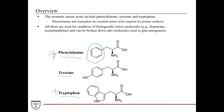Phenylalanine and tryptophan are essential amino acids required for protein synthesis. Tyrosine, on the other hand, can be synthesized by the body, so it's a non-essential amino acid. However, all three are used for the synthesis of biologically active molecules such as dopamine and norepinephrine, and they can also be broken down into molecules used in gluconeogenesis. The aromatic amino acids are very important because they contribute to a lot of biological functions.